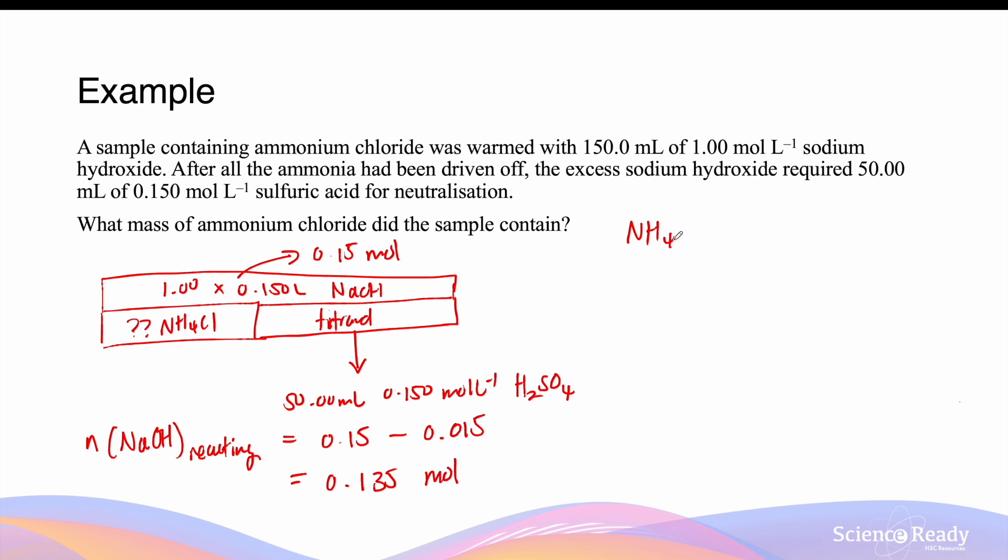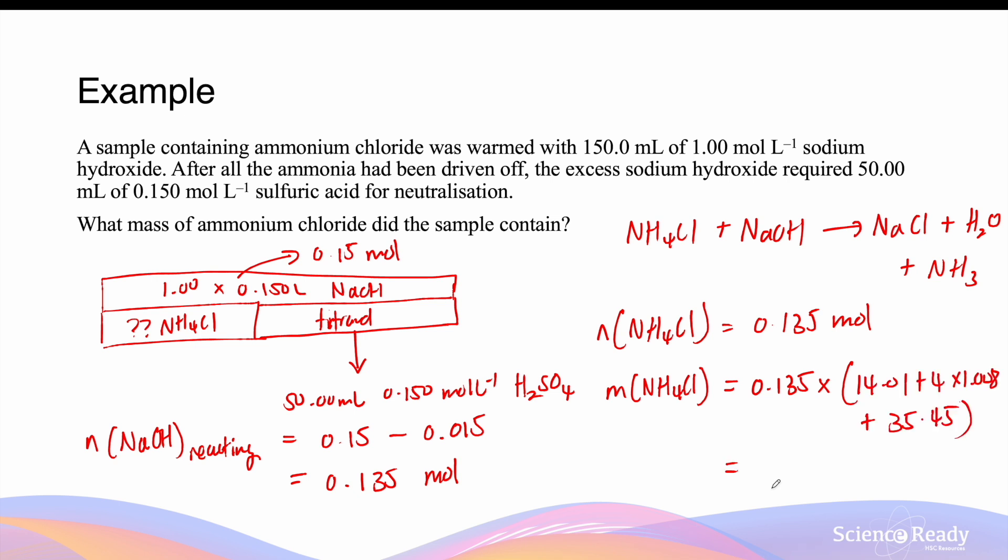Ammonium chloride, being an acidic salt, reacts with sodium hydroxide in a 1 to 1 ratio, as shown here. So the moles of ammonium chloride is also equal to 0.135 mol. To find the mass of ammonium chloride, we simply multiply the moles by its molar mass, and this gives me a final answer of 7.22 grams. I will leave this as three significant figures.